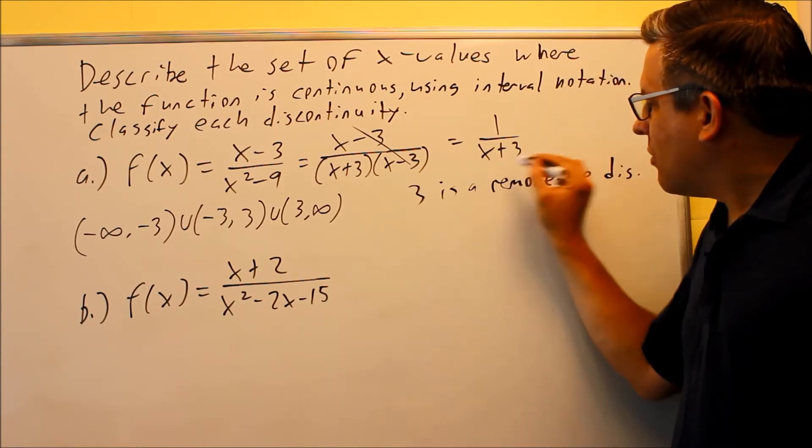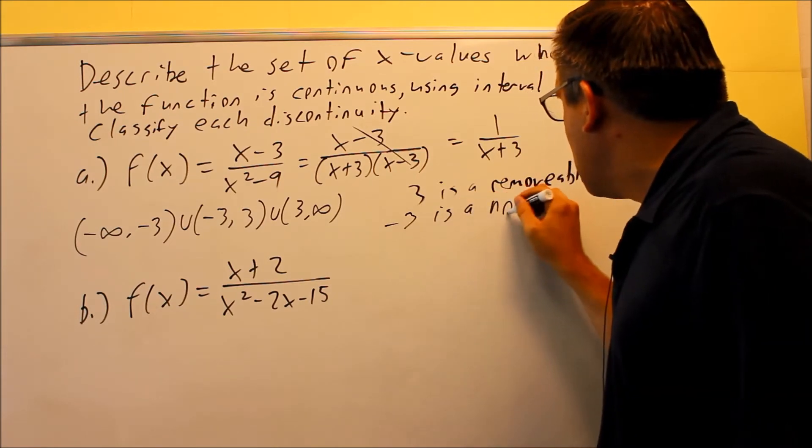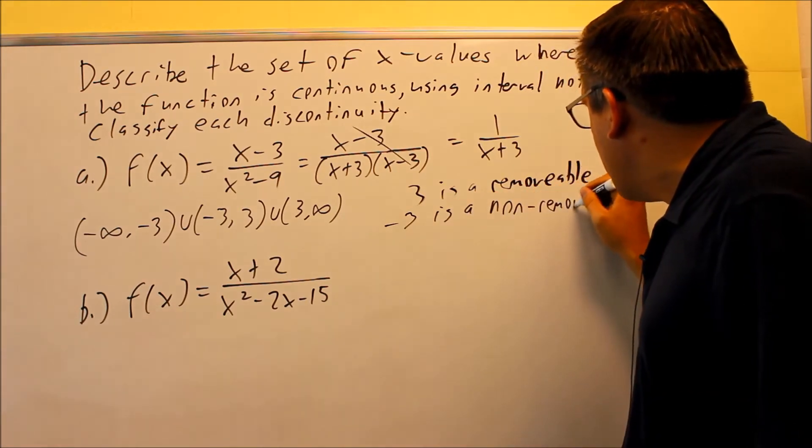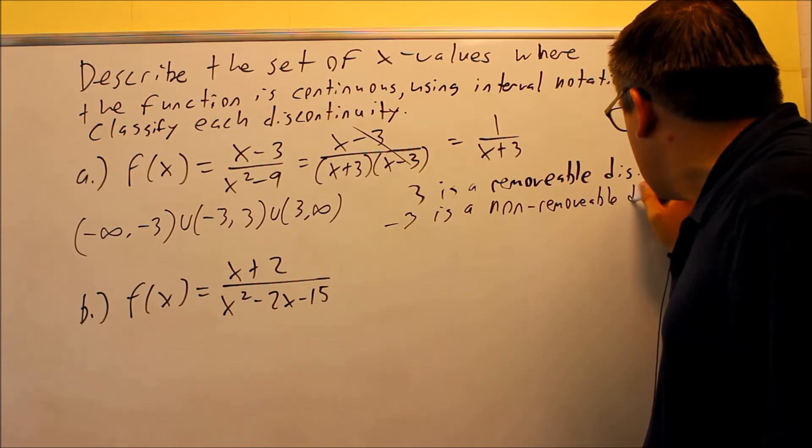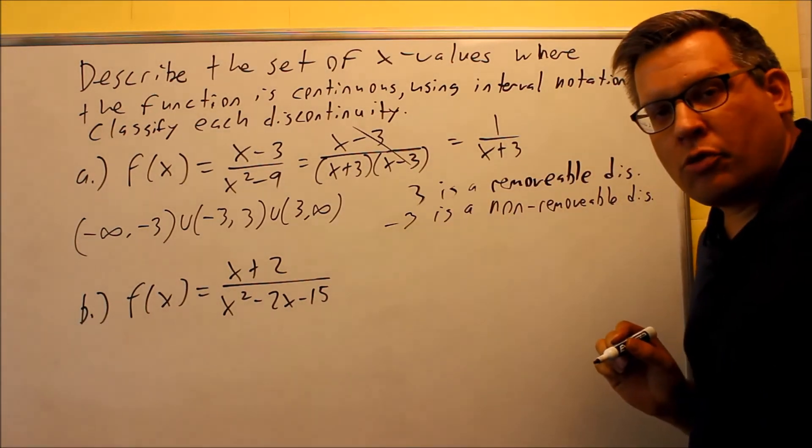The part that makes the bottom equal to 0 is going to be negative 3. So you're going to say negative 3 is a non-removable discontinuity. So 3 is removable, negative 3 is non-removable.